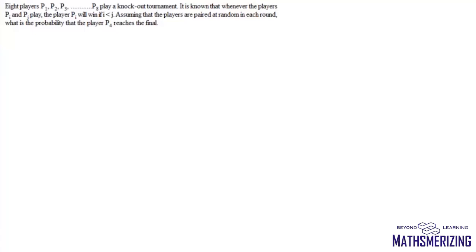Now here the question is, 8 players P1, P2, P3 and P8, they play a knockout tournament. It is known that whenever the players PI and PJ play, then the player PI will win if I is less than J. Now assuming that players are paired at random in each round, what is the probability that player P4 reaches the final?